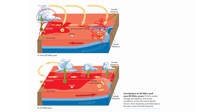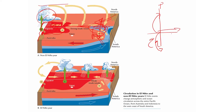That air hits the tropopause. When we looked at the equator-to-poles circulation we had the Hadley cell going poleward, but we did not say what happens longitudinally. Air is not only going towards the poles but also towards the east and west. This part that is going to the east and sinking is called the Walker cell.